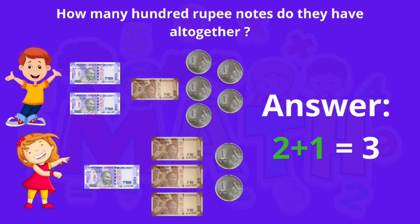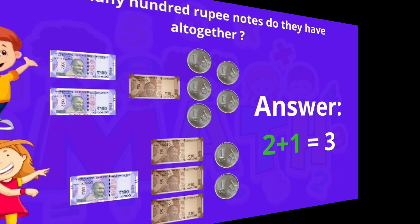First we will count the 100-rupee notes. Tony has two 100-rupee notes and Sonu has one 100-rupee note, which means two plus one is equal to three. So there are three 100-rupee notes in total.